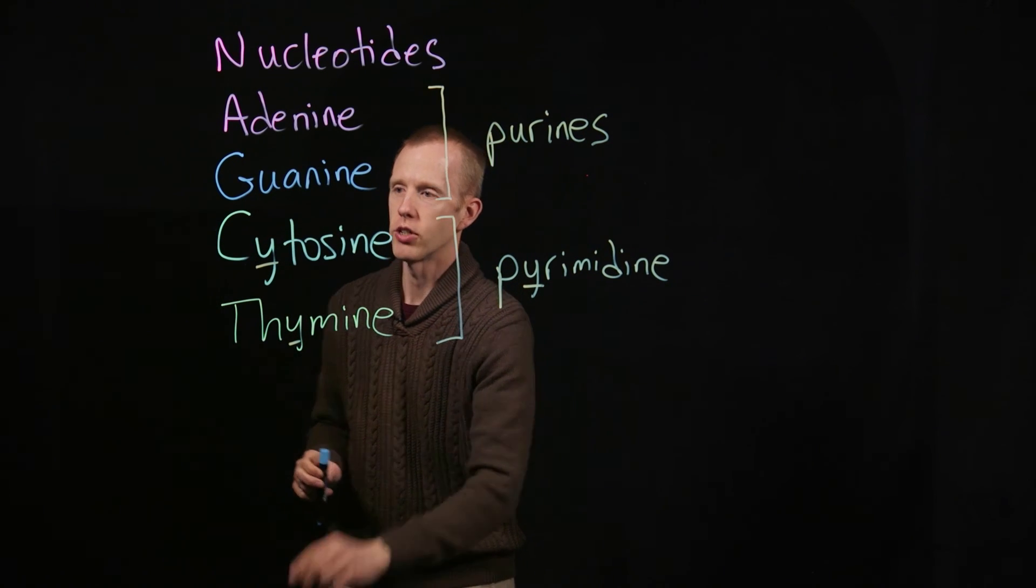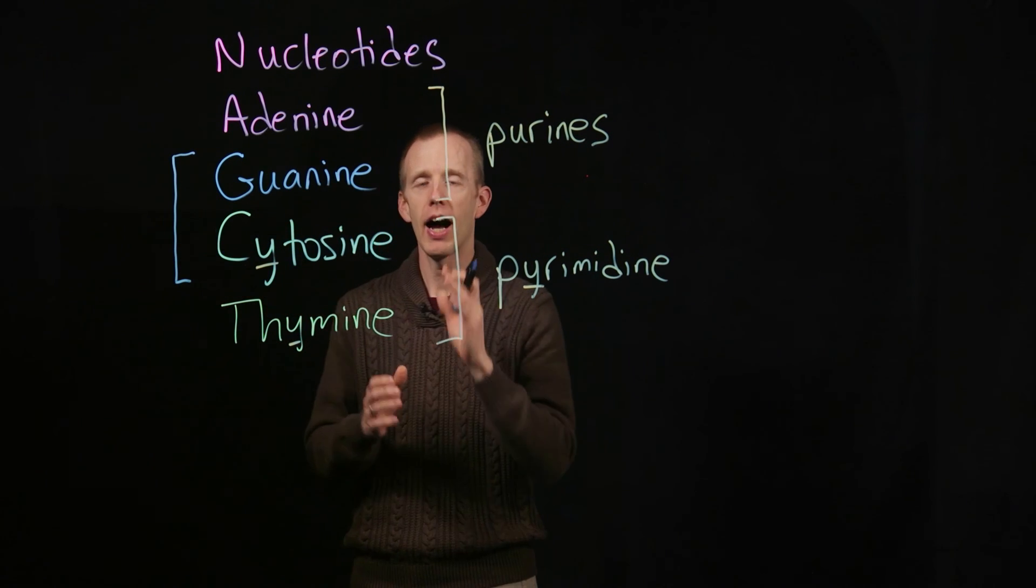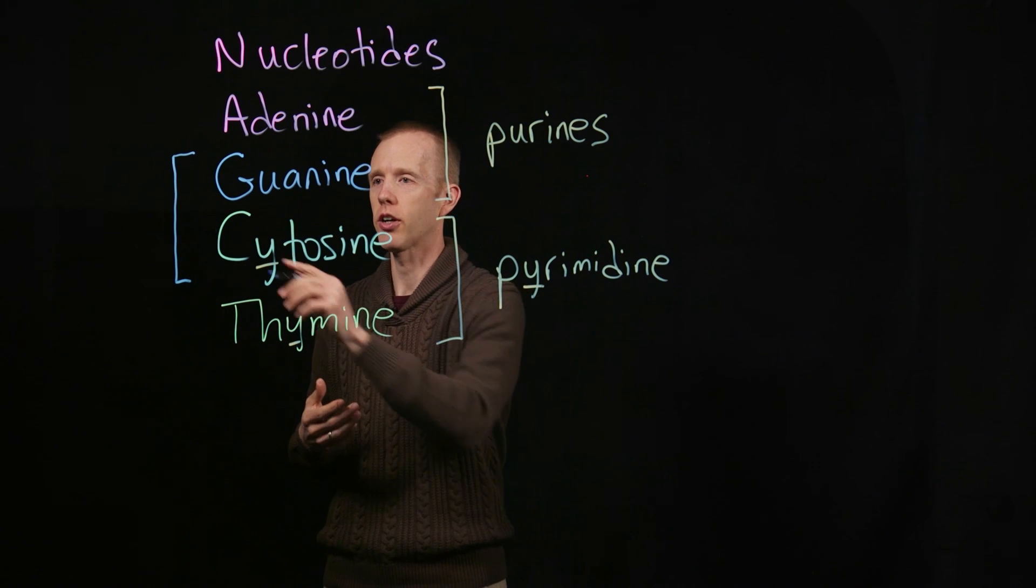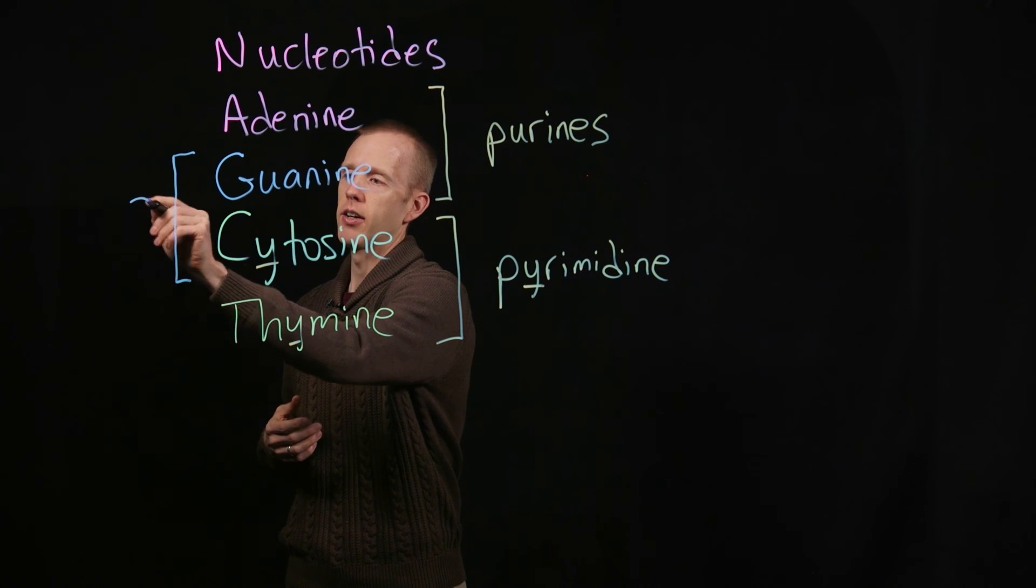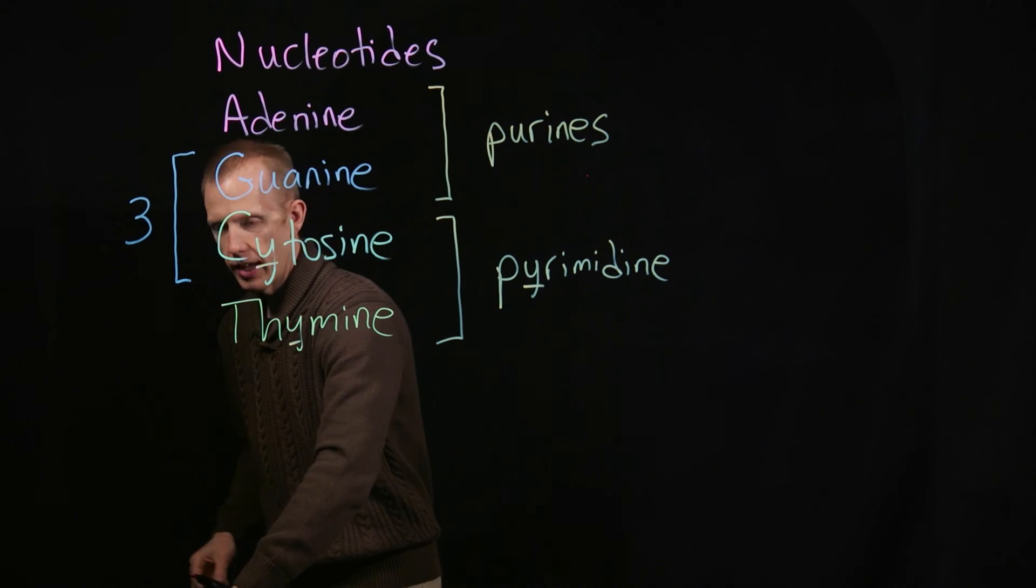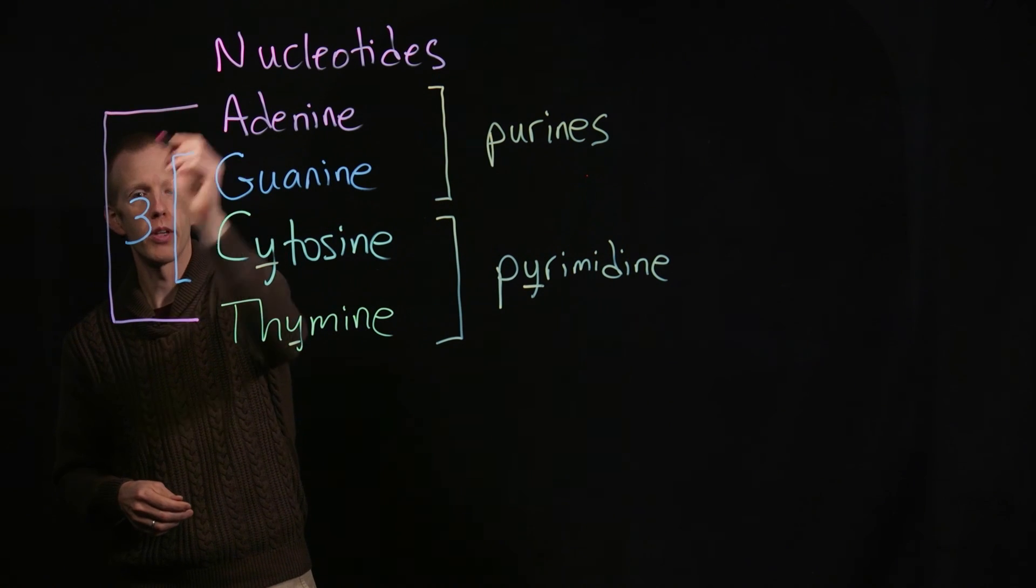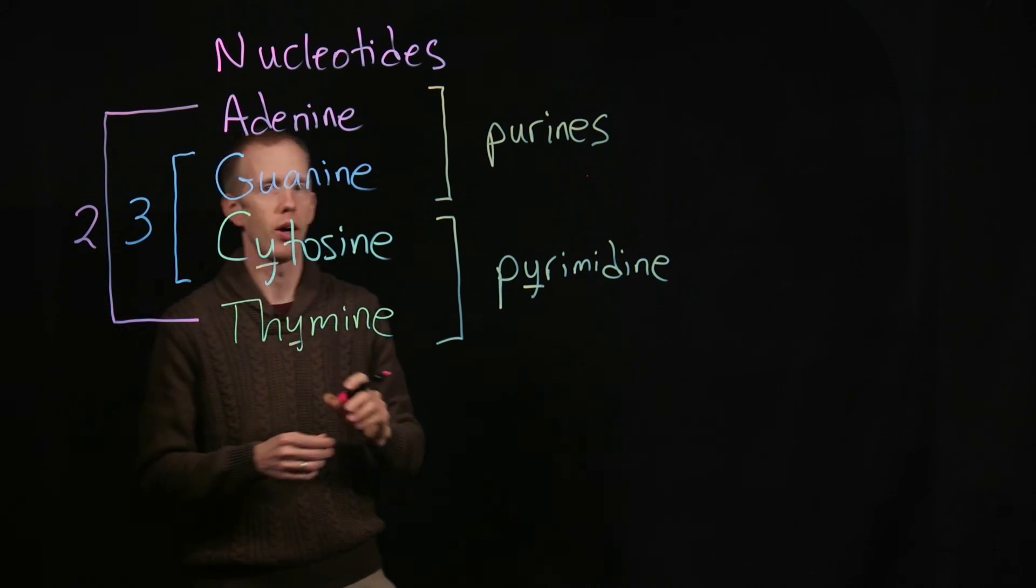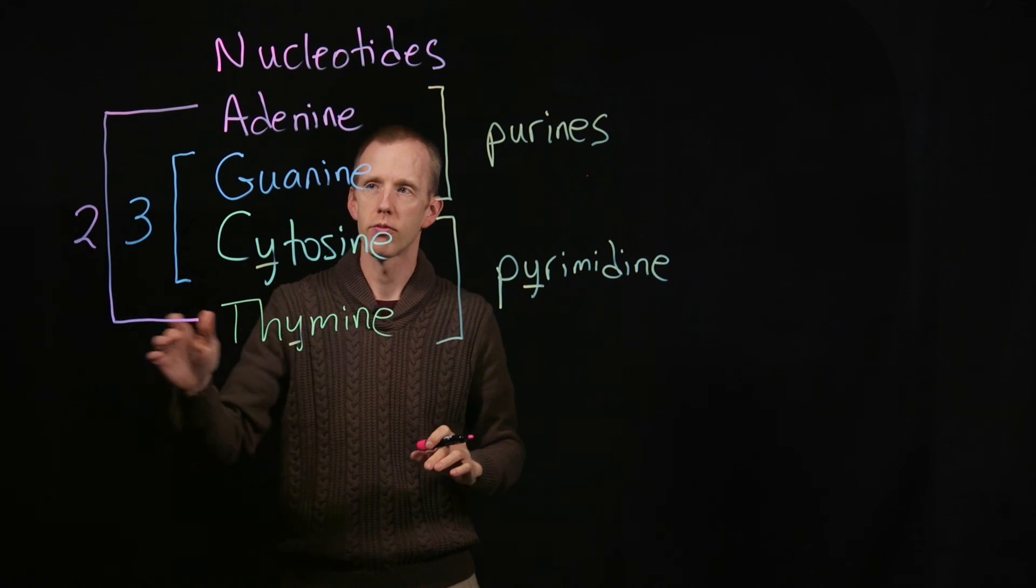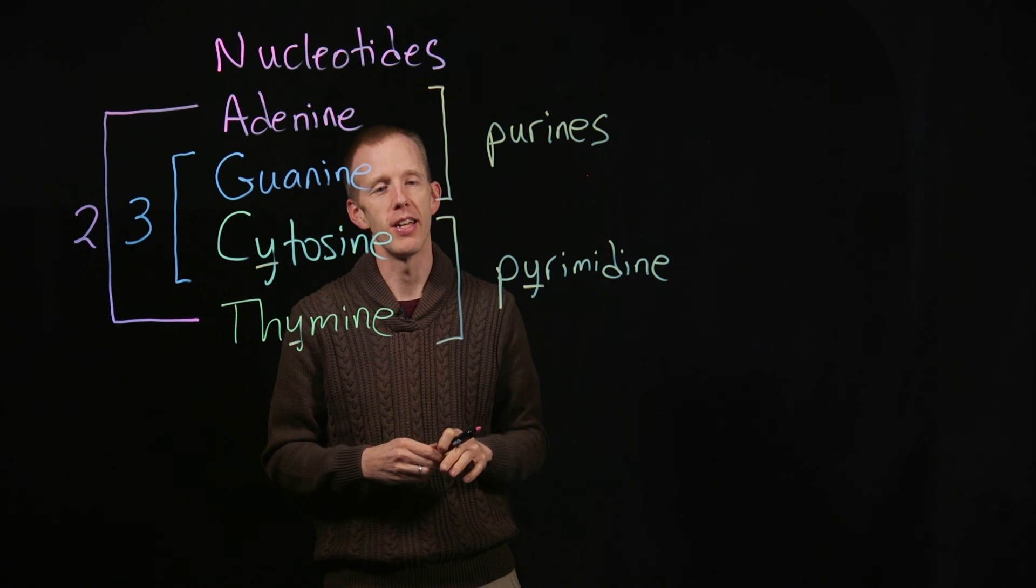And I also want to remind you that there's a separate categorization, which is how many hydrogen bonds these nucleotides make with each other when they're in a double helix structure. That guanine and cytosine base pair with each other using three hydrogen bonds, but adenine and thymine base pair with each other using two hydrogen bonds. So we've got purines and pyrimidines, we've got three hydrogen bonds between G's and C's, and two hydrogen bonds between A's and T's.